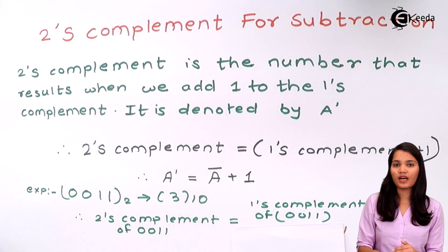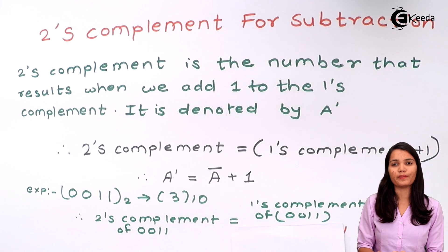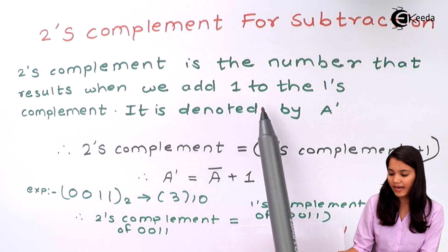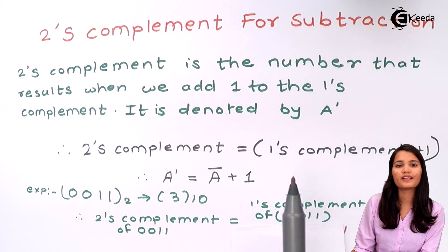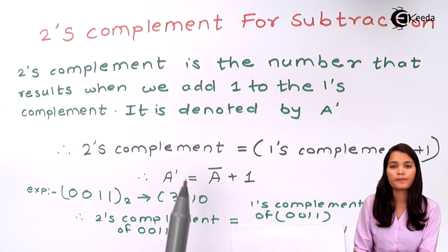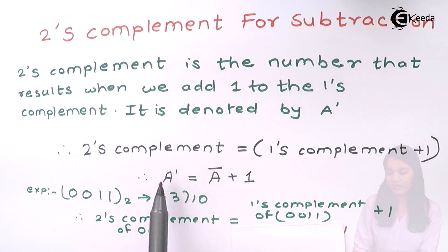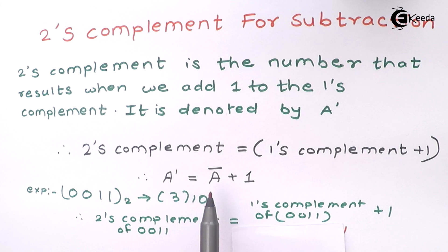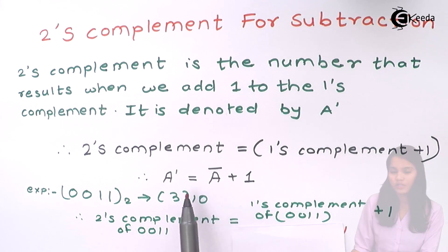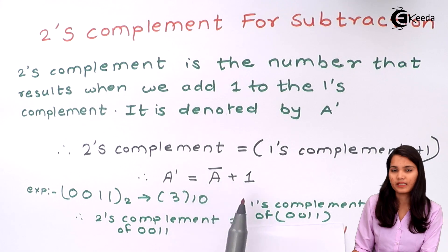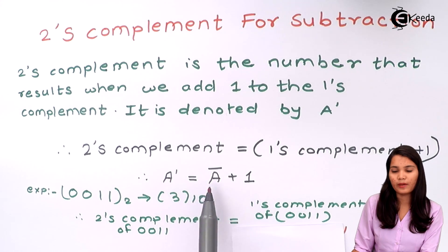So let's see how to obtain the 2's complement. The 2's complement is the number that results when we add 1 to the 1's complement, and it is denoted by a dash. Here is a simple formula: 2's complement equals 1's complement plus 1. Since the 1's complement of A is denoted by A-bar, the 2's complement of A equals A-bar plus 1.